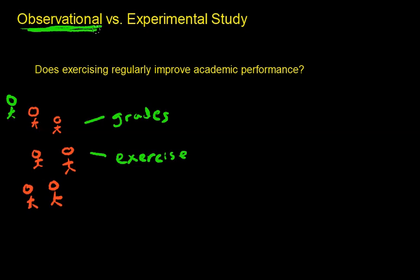The problem with this type of study in this scenario would be that if I were to notice that my students with high grades also exercised a lot, that would just be a correlation. That would not be a causal relationship. I couldn't really infer that exercise caused the high grades. There might be another factor.